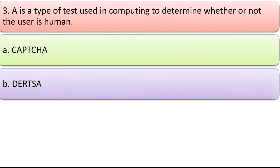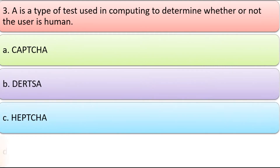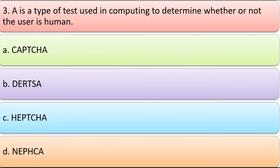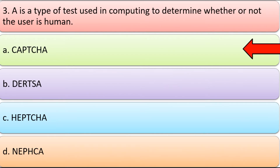Third, a blank is a type of test used in computing to determine whether or not the user is human. Options: a) Captcha, b) Resulta, c) Captcha, d) Napcha. Correct answer is a) CAPTCHA.